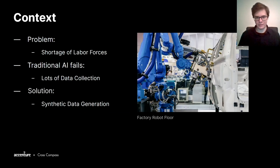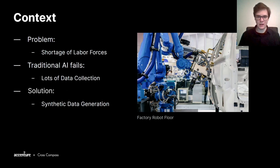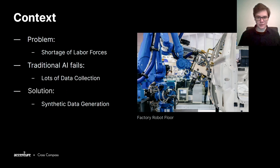Let's start with the context for this project. We are trying to solve the shortage of labor forces in the industry. Because of the aging population in Japan and more and more countries, less and less people become available to work in the factory, and therefore we need to find efficient ways to program equipment and robots automatically without the need of human intervention. Artificial intelligence may be the solution, but it typically requires hours of data collection to set up with every new task, which is not a viable option in most cases. At CrossCompass, we've achieved a new type of technology that can train an AI to program a robot without requiring any data collection. We use Unity to create synthetic data, and then we use this data to train an AI.